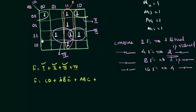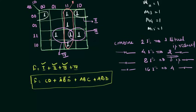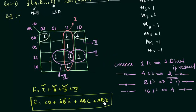For the fourth prime implicant, A and B are both 1 and not changing. C is changing from 0 to 1 while D is 1, so we neglect C and write D, giving ABD. So this is the reduced form of the function obtained from the KMAP. You now know how to draw a 16-cell KMAP for 4 variables, fill in the values, pair them up, and write the minimized expression.